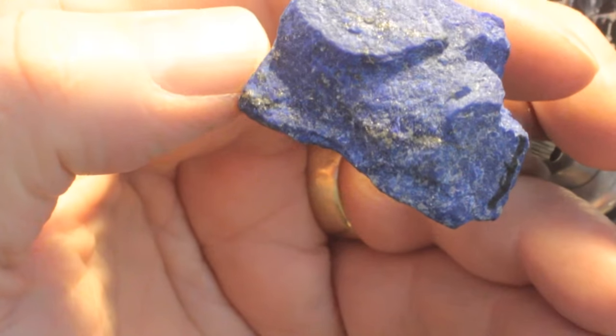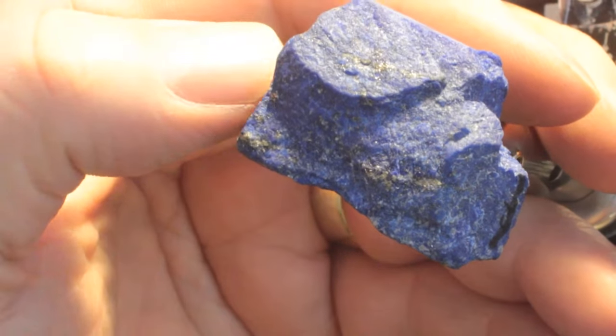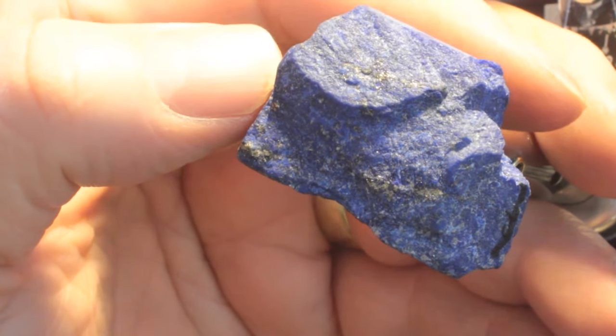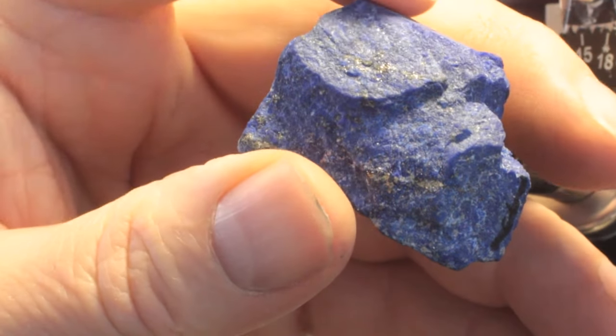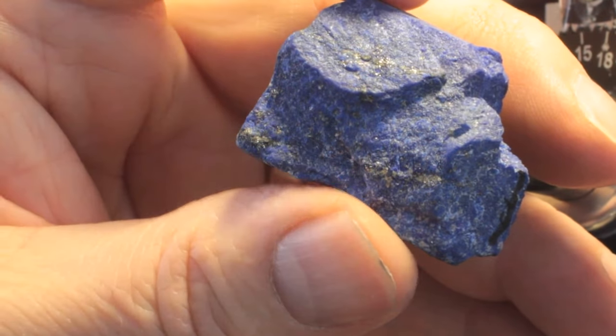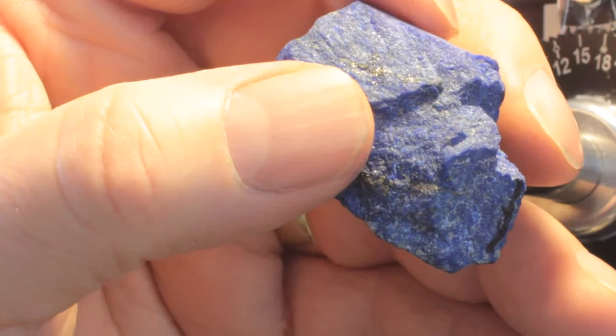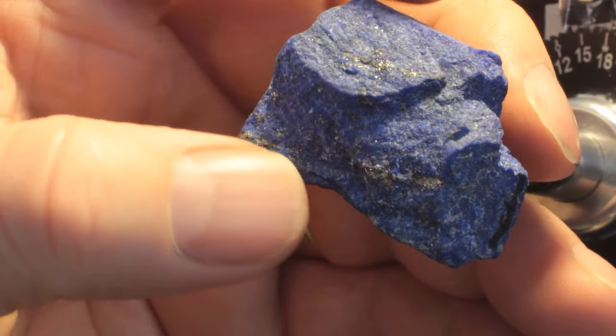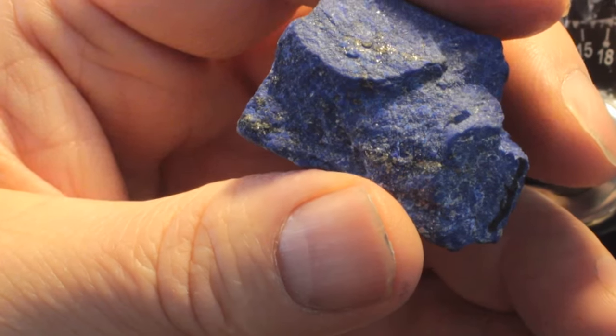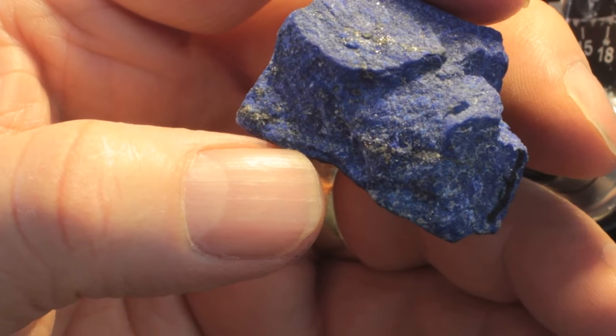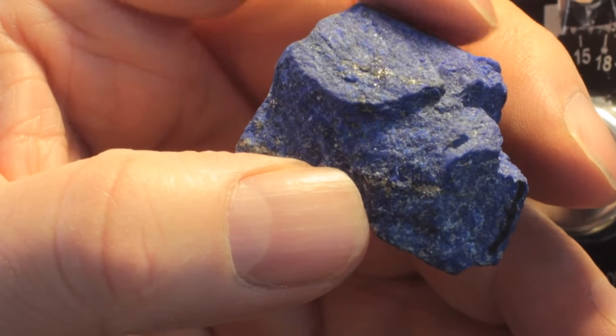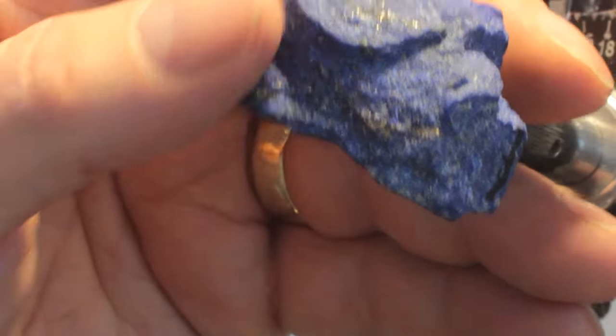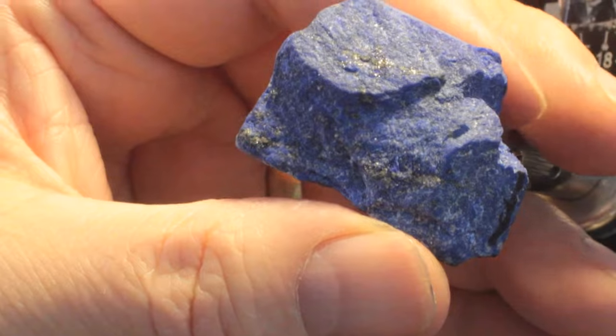Of course, lapis is not transparent at all. You can't see through lapis. So there's no need to cut the pavilion, except I'm going to go ahead and do a rough preforming of the pavilion so I get the cross lined up properly. I may come back later and just use step cuts.